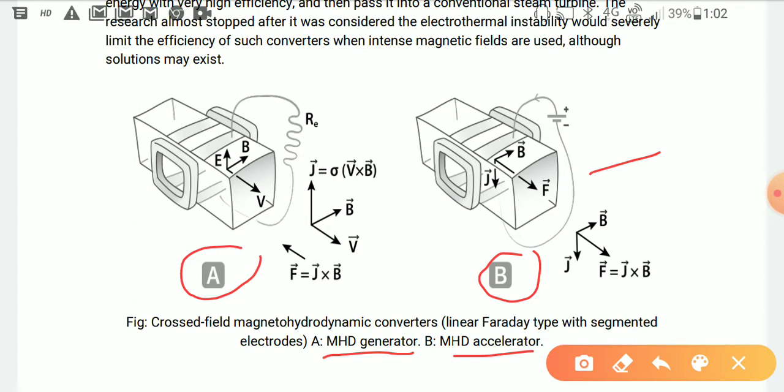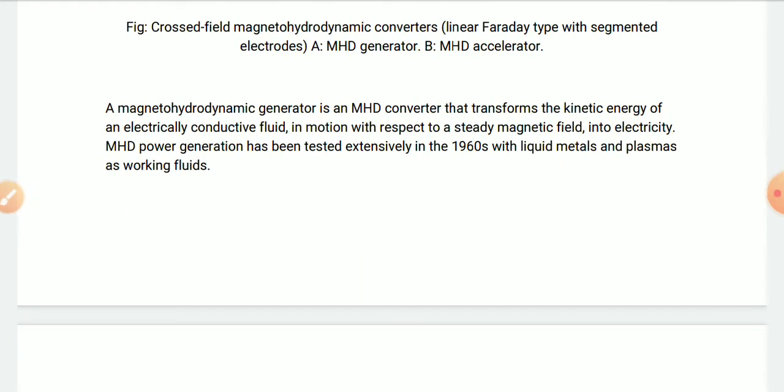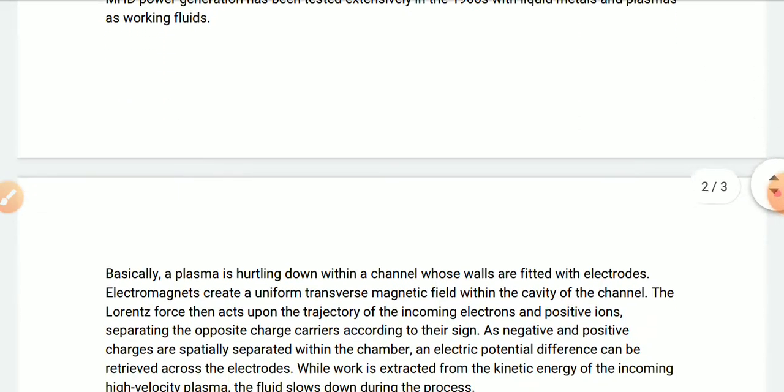For figure B, the MHD accelerator, the fluid is ionized due to the energy. So the vice versa process occurs for the magnetohydrodynamic converter. A magnetohydrodynamic generator is an MHD converter that transfers the kinetic energy of an electrically conductive fluid in motion with respect to a steady magnetic field into electricity. MHD power generation has been tested extensively in the 1960s with liquid metals and plasma as working fluids.